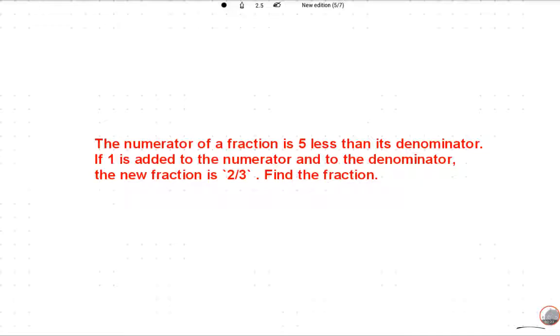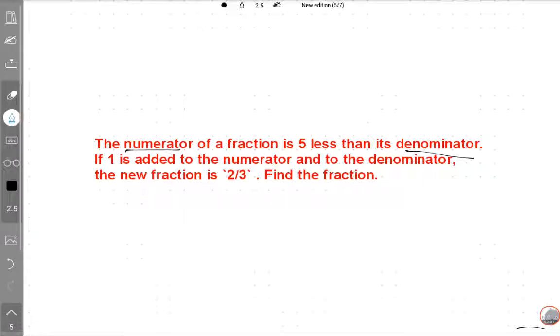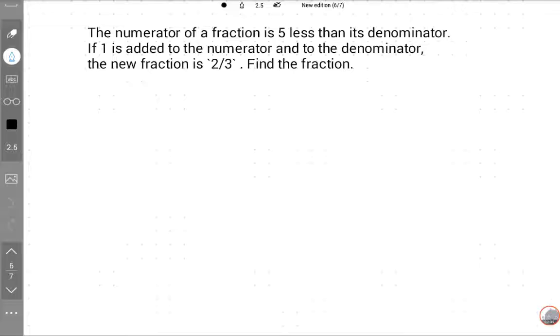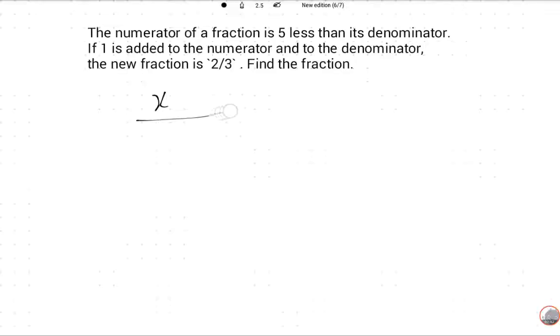What is the numerator and denominator? We will suppose variables. It's a very simple question but it's tricky. So what is the numerator? x. And the denominator? Since the numerator is less than the denominator by 5, the denominator is x+5.